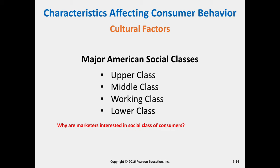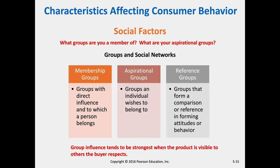Why do marketers care about where somebody is in social class, or where they see themselves? There are probably more people who play polo and spend money on polo in the upper quarter of earners than in the lower quarter. So if we're marketing polo-related items or polo ponies, we don't want to waste time on a group that's not interested. Social class is one of the factors that can play into what consumers are searching for and their likelihood to purchase.